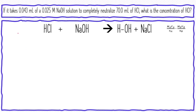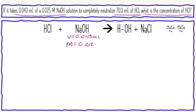The balanced equation shows hydrochloric acid plus sodium hydroxide yielding water and sodium chloride. I'll take the information from the problem and list it under the substances it belongs to. For sodium hydroxide: volume = 0.043 mL, concentration = 0.025 mol/L. For hydrochloric acid: volume = 70.0 mL, and the concentration is what we're solving for — that's our unknown.